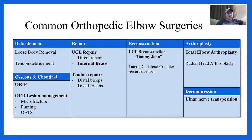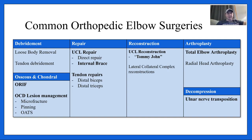Here are the surgeries we'll cover — the most common orthopedic elbow surgeries in each category. You have debridements, osteochondral surgeries, repairs, reconstructions, arthroplasties, and decompressions. We'll go over elbow ORIF, OCD lesion management, UCL repair, UCL reconstruction — don't confuse the two, they are separate surgeries with the same goal — tendon repairs of the distal biceps and distal triceps, total elbow arthroplasty, and ulnar nerve transposition.